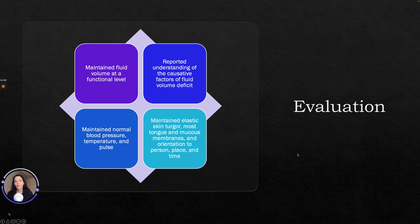Our evaluation can include maintained fluid volume at a functional level, maintained normal blood pressure, temperature, and pulse, maintained elastic skin turgor, moist tongue and mucous membranes, orientation to person, place, and time, and reports of understanding of causative factors of fluid volume deficit. These are just some examples — you can have different evaluations based on how your patient is presenting and how your interventions worked.